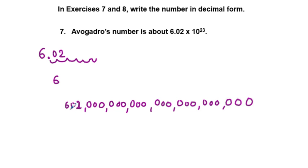We can count from the 6.02. So from .02, we count 1, 2, 3, 4, 5, 6, 7, 8, 9, 10, 11, 12, 13, 14, 15, 16, 17, 18, 19, 20, through 23. So this would be our Avogadro's number written out in decimal form.